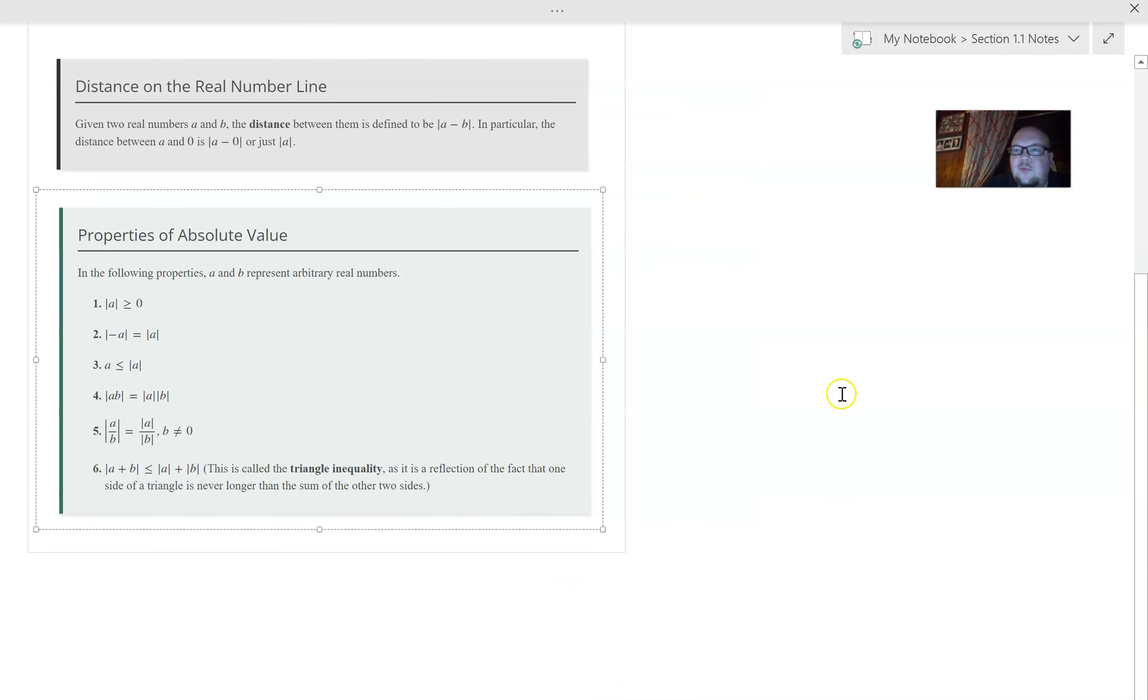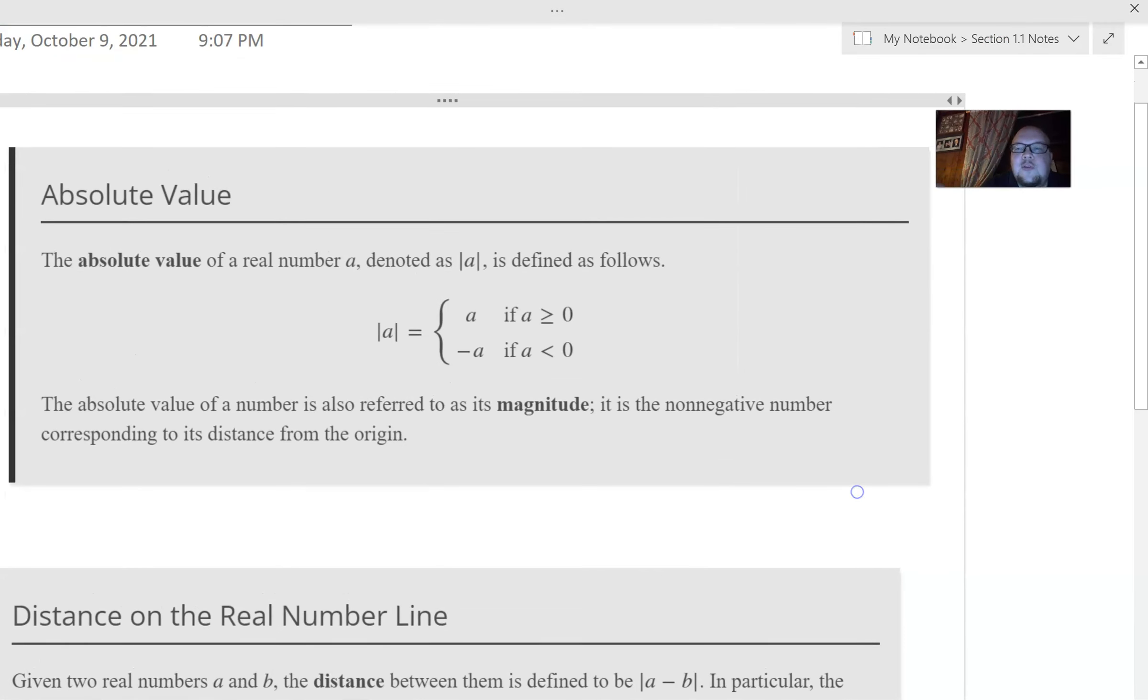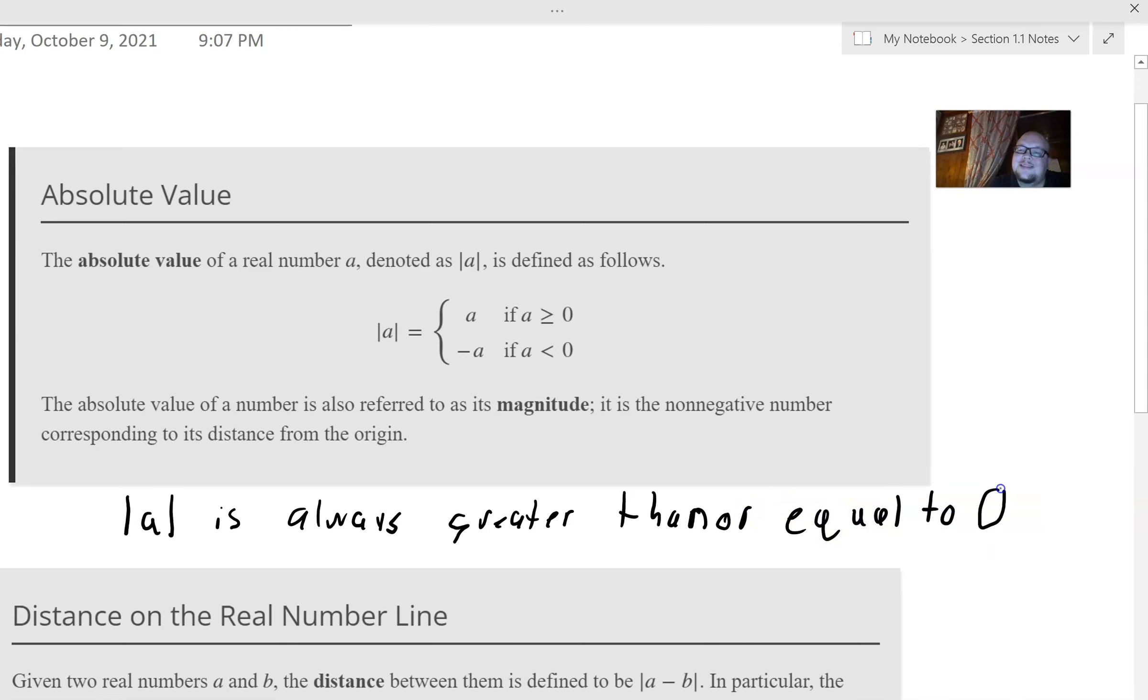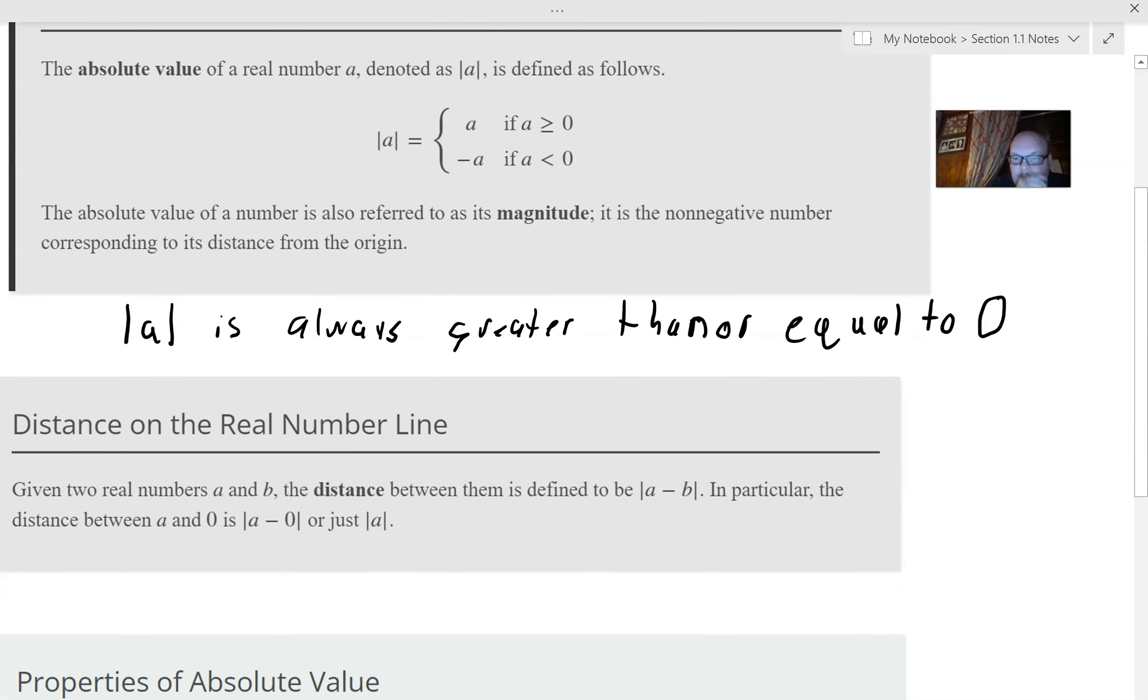Another thing, absolute values. So remember, absolute is going to be those parallel bars around the number. Remember, inside the absolute can be positive or negative. However, absolute always equals a positive. So here, the absolute value of a is always greater than or equal to zero. Because as this is talking about, absolute tells you how far a number is from zero. And in theory, distance cannot be negative.